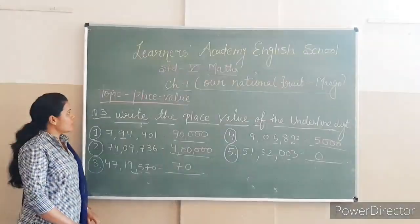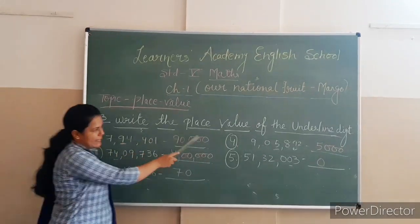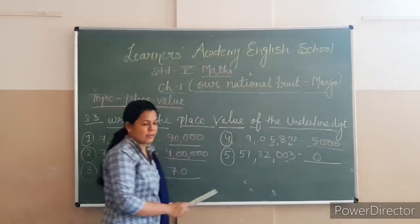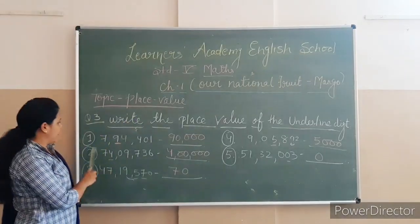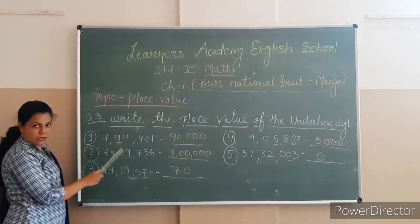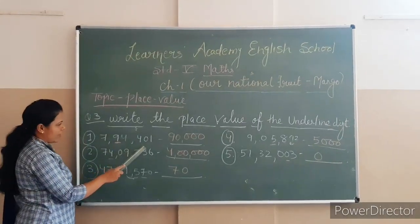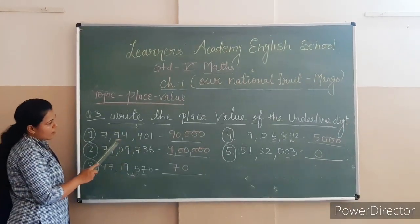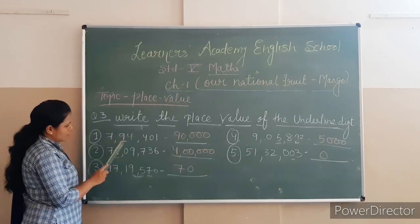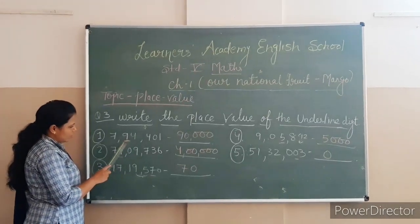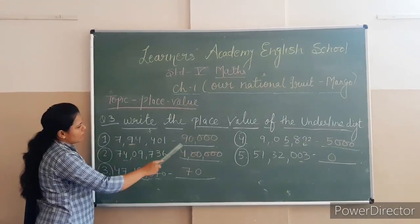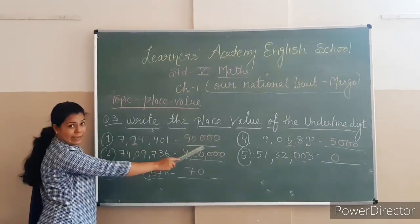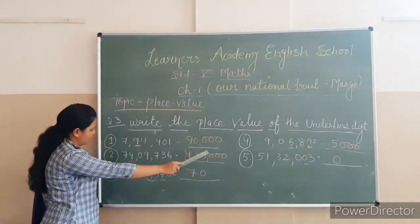Next is question number 3: write the place value of the underlined digit. First, in 94,400, the 9 is in the position of the 10,000s, so it will be multiplied by 10,000 giving 90,000.